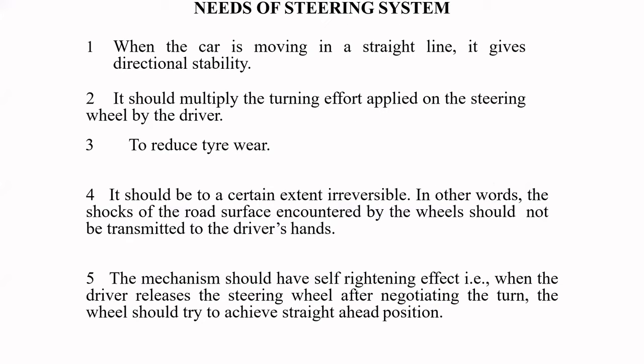The need for a steering system arises because any automobile's objective is to run in the desired direction, and without the steering system it is not possible for any automobile to exist. The needs of the steering system include: first, when the car is moving in a straight line, the steering system must provide directional stability. Second, the steering system should multiply the turning effort applied on the steering wheel by the driver.